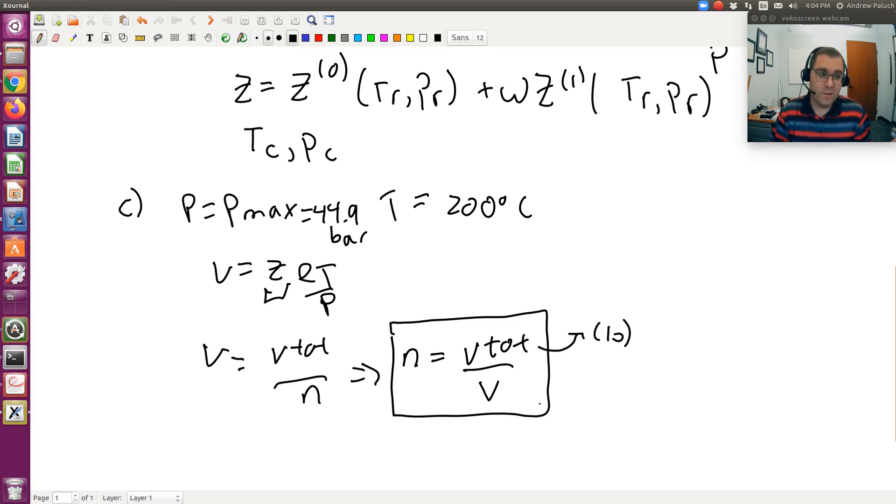Here we're using Lee Kessler tables, you could just as well calculate Z from cubic equations of state. Truncated virial probably wouldn't be applicable here, especially maybe for B, C probably not since we're dealing with high pressures. Lee Kessler or cubic equation of state would be the way to go. Hope that helps, let me know if you have any questions. Thank you.